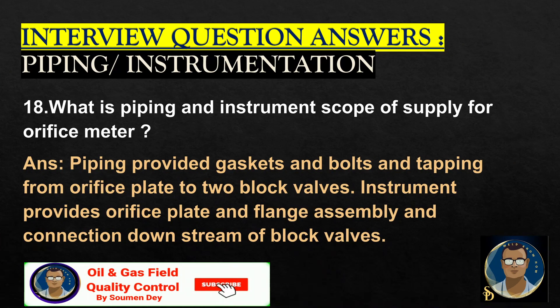What is the piping and instrumentation scope of supply for an orifice meter? Piping provides gaskets and bolts and tapping from the orifice plate to two block valves. The instrument provides the orifice plate and flange assembly and the connection downstream of the ball valve.